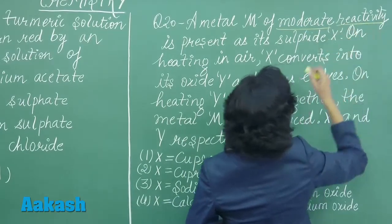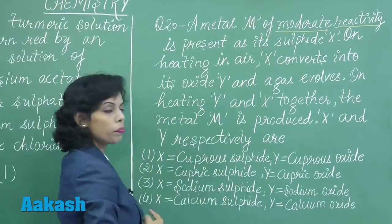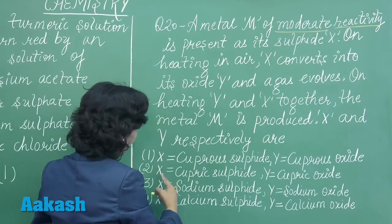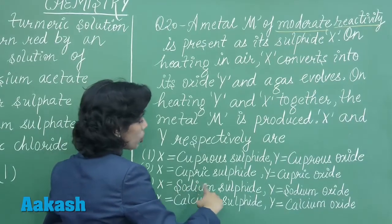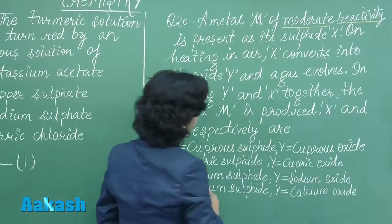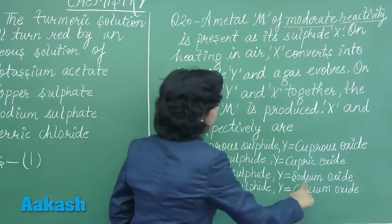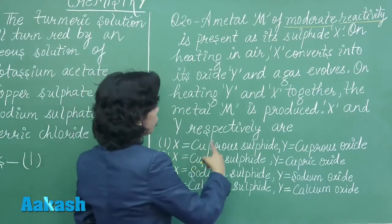Since the metal is of moderate reactivity, it is not a highly reactive metal. The first option has cuprous sulphide and cuprous oxide, suggesting the metal could be copper. The second option has cupric sulphide and cupric oxide, which could also be an answer. However, options 3 and 4 show sodium sulphide and sodium oxide — we know sodium is a highly reactive metal, so these cannot be the correct options.